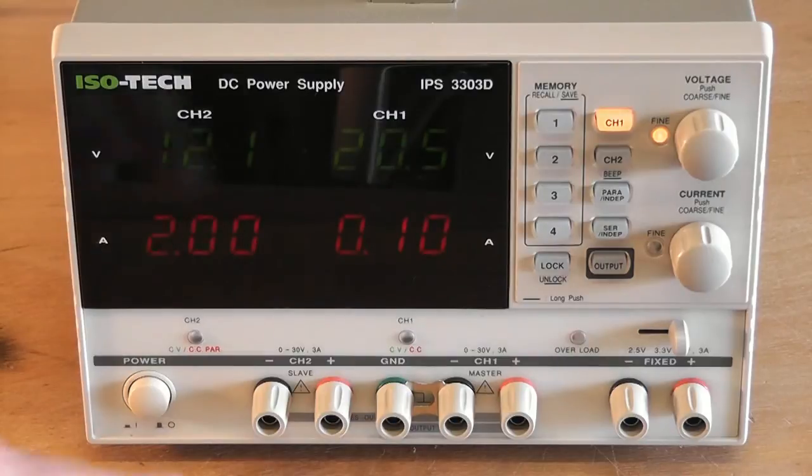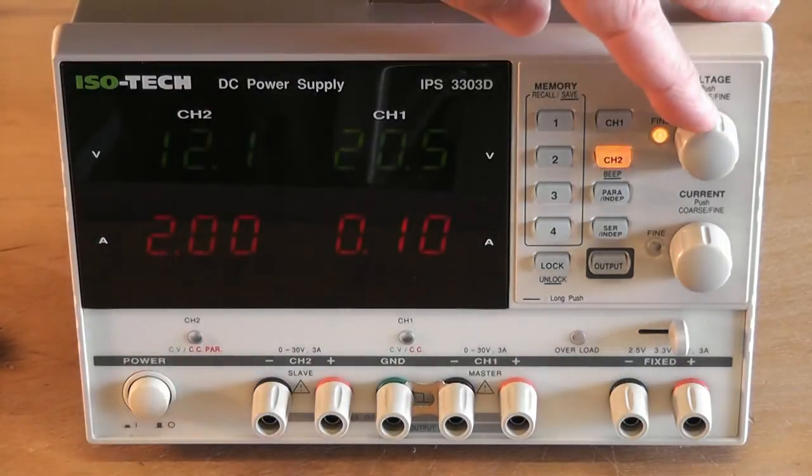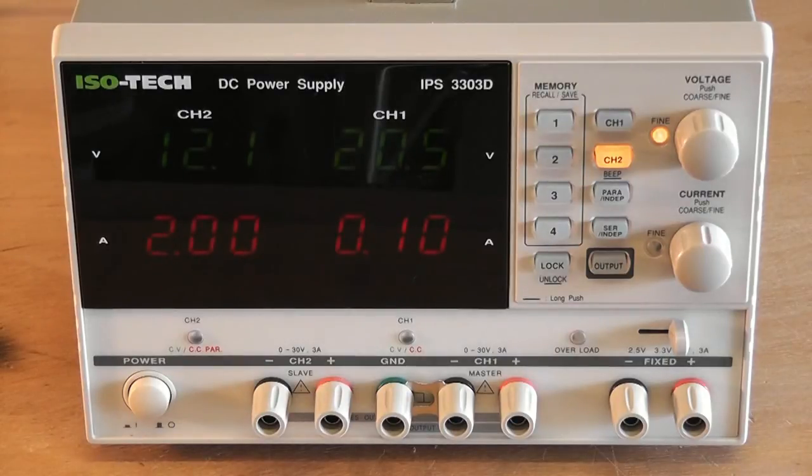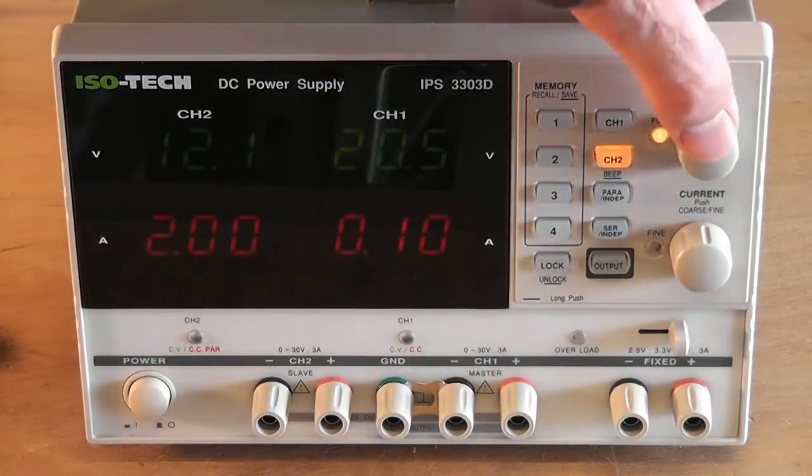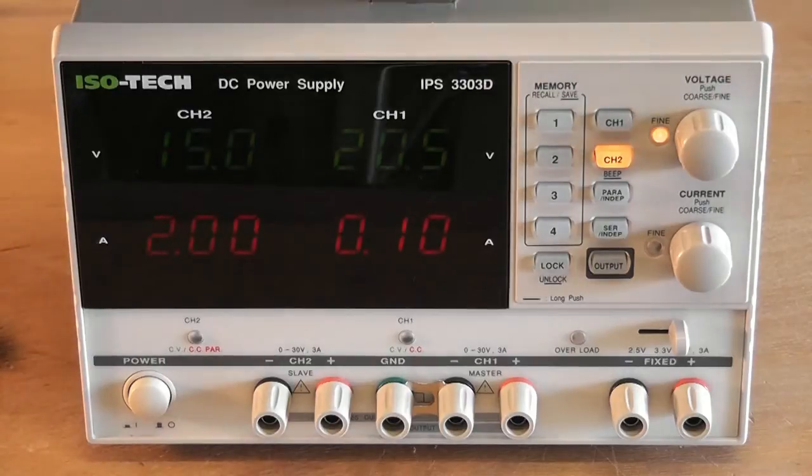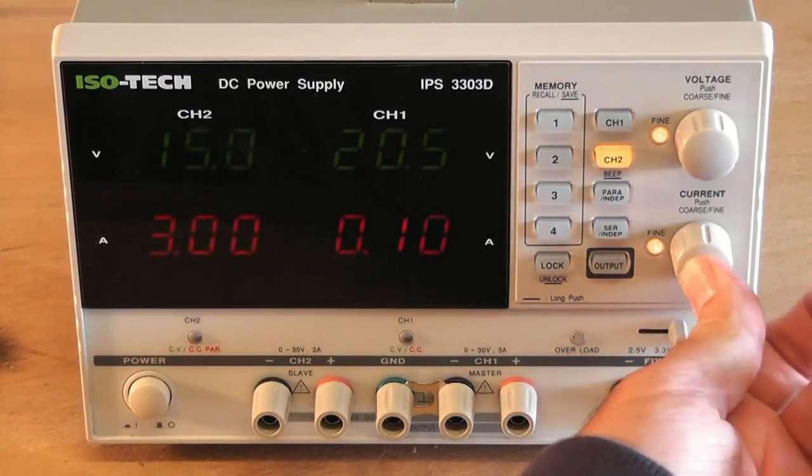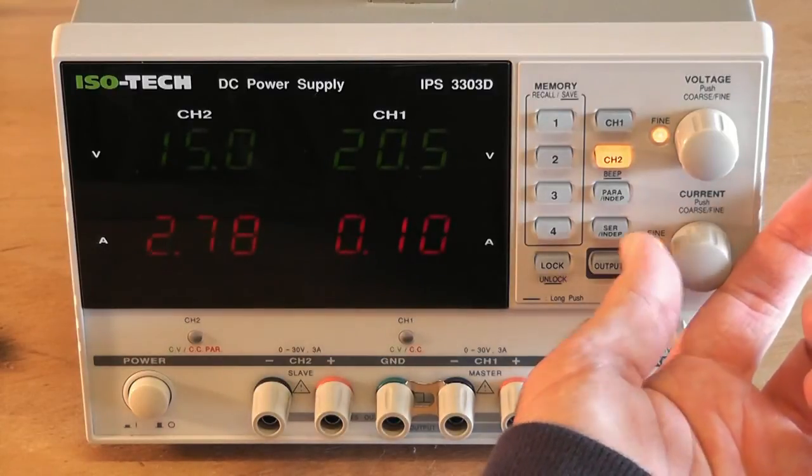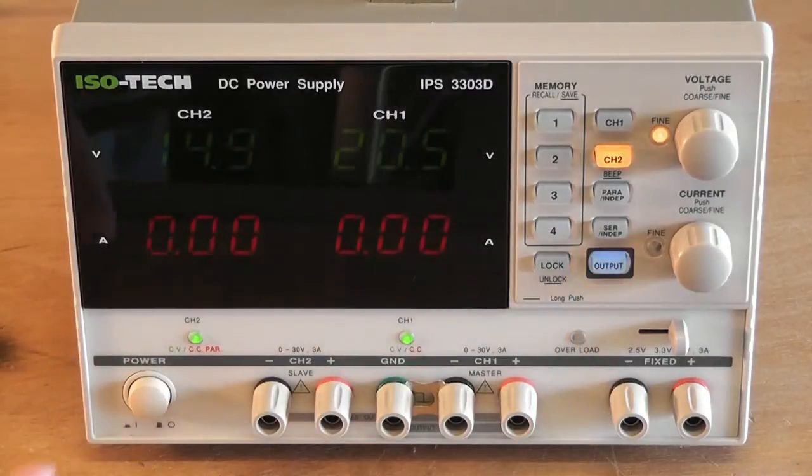If we press this dial in it becomes coarse adjustment and it will change in one volt increments. So it's quite useful for being able to dial in your voltage fairly quickly and then press again to get it exactly what you want. But supposing we wanted to change the voltage on channel two, all we do is press the channel two button. Then when we twiddle it, this won't change, that one will. And the outputs down here will be different when we actually enable them. At the moment nothing's being sent to the output. When we press the output button, the settings we've dialed in here will be sent to the outputs. So let's change channel two to 15 volts. That's relatively pain free and we can do the same with the current.